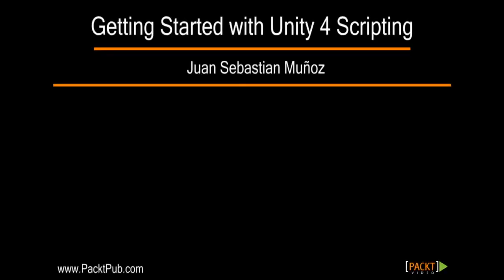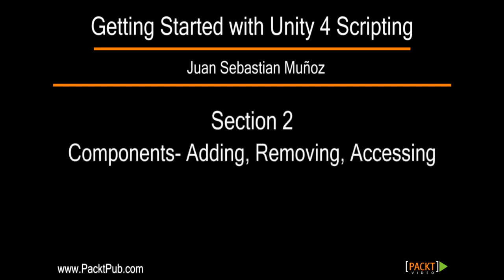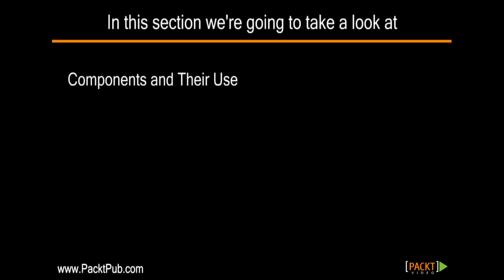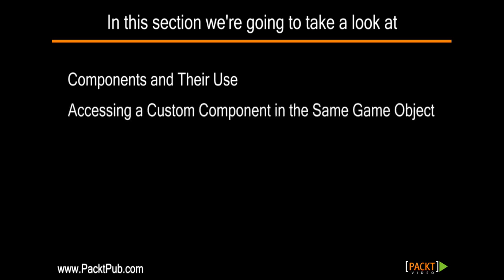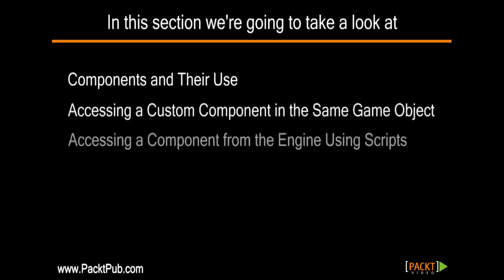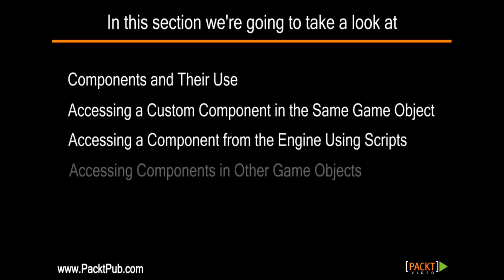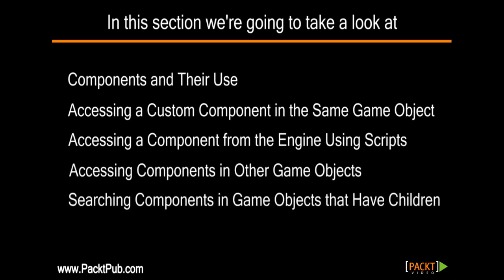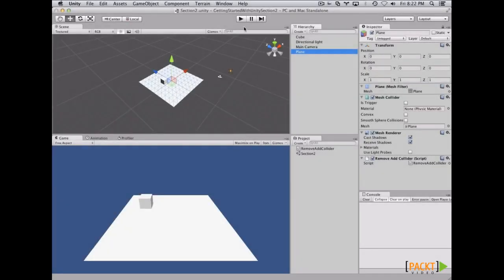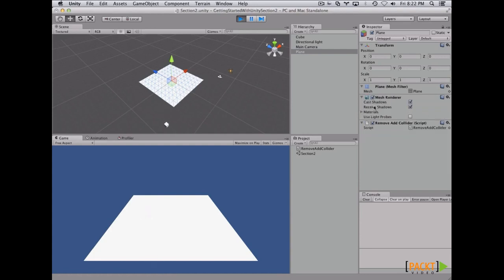Hi and welcome to Getting Started with Unity for Scripting. In this section, we are going to learn about components — what they are, how to add them, how to remove them, how to access another component, how to access components on other game objects, and their use. On this video, we are going to learn how to remove components from a game object via scripting. First of all, let's start by explaining what a component is.